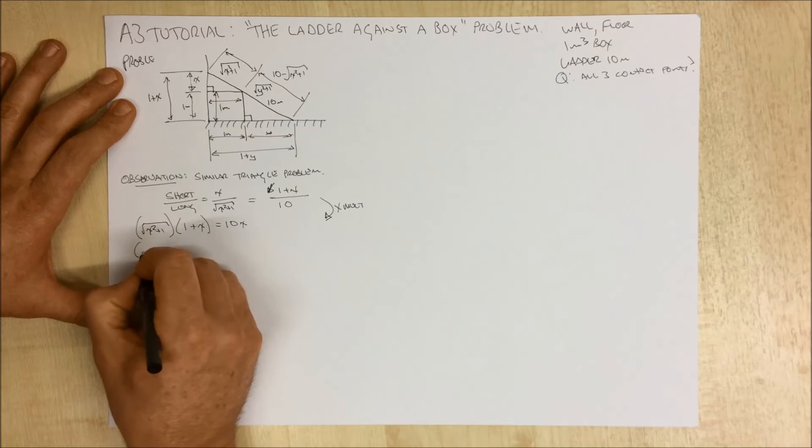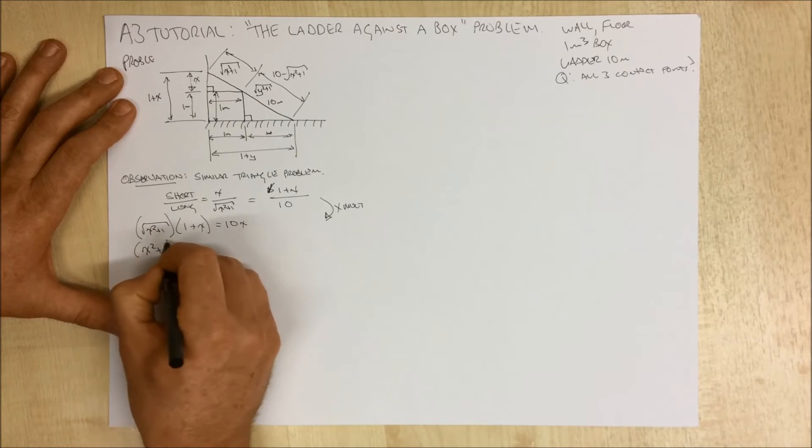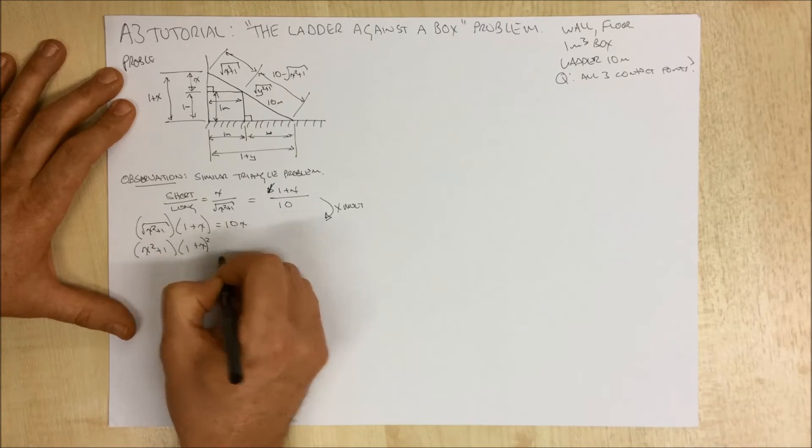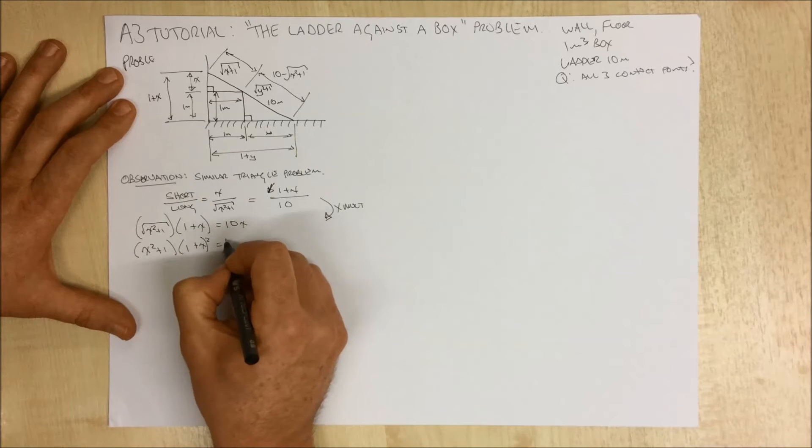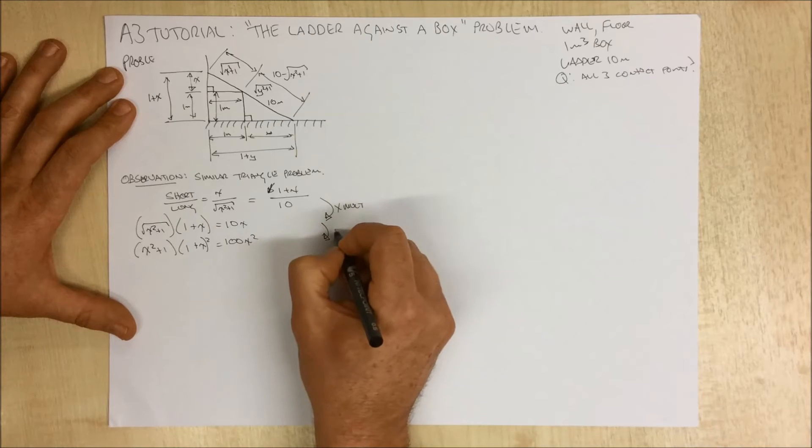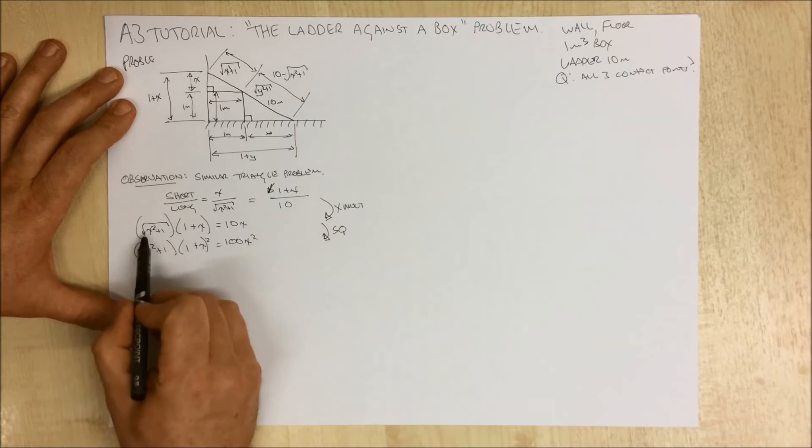So we're going to get rid of the square root term, and that would give us x squared plus 1 over 1 plus x squared, all squared, equals 100x squared. All I've done is squared everything to get rid of that term there.